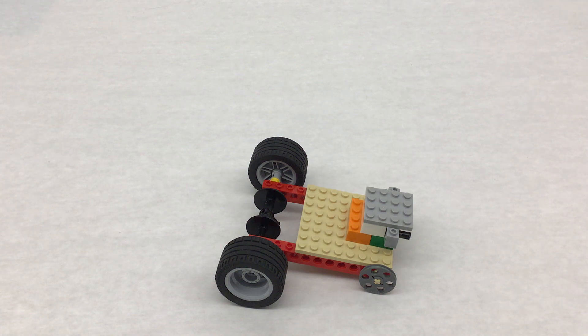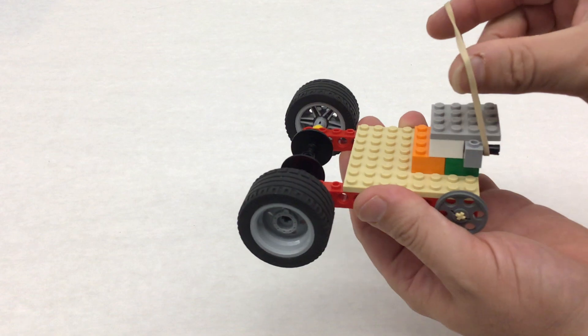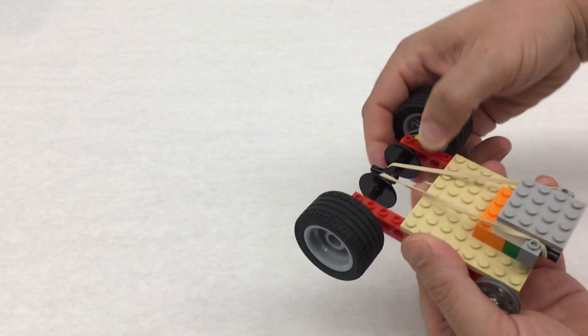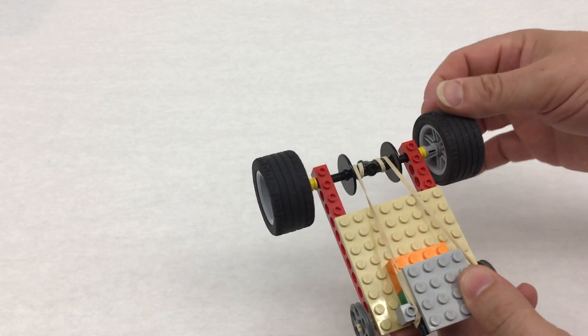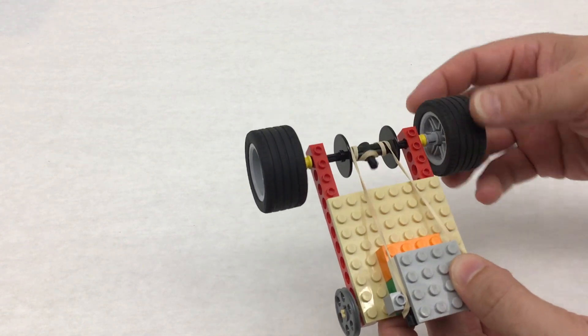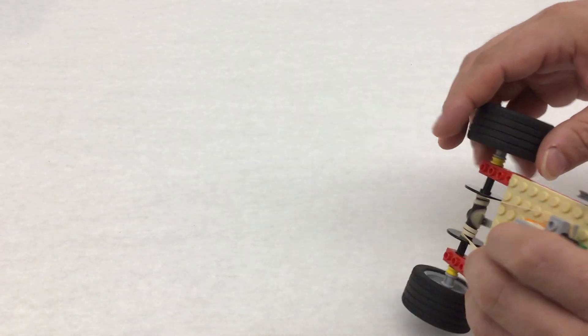Take that rubber band, loop it around the front, loop it around the rear axle, and then you can wind it up several ways. You can twist with your hand, making sure to always keep a finger on the wheel so it doesn't unwind. You can spin the entire car around the axle one way to do it.